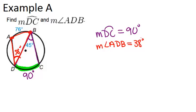So remember that inscribed angles are always half the measure of arcs, and arcs are always double the measure of the inscribed angle.